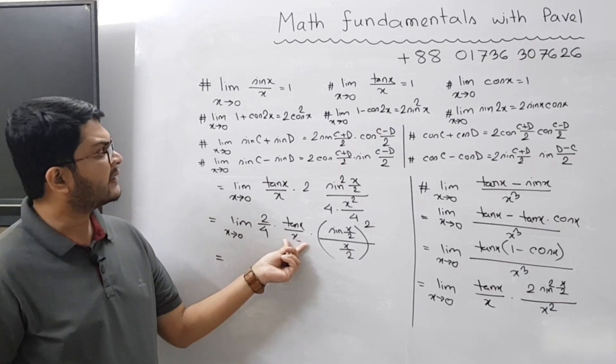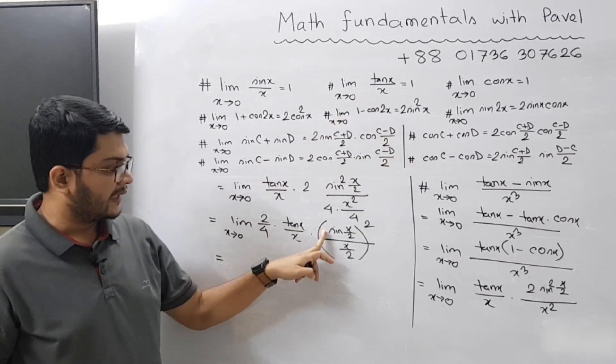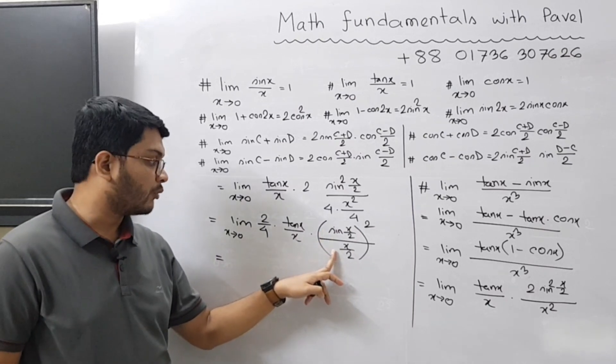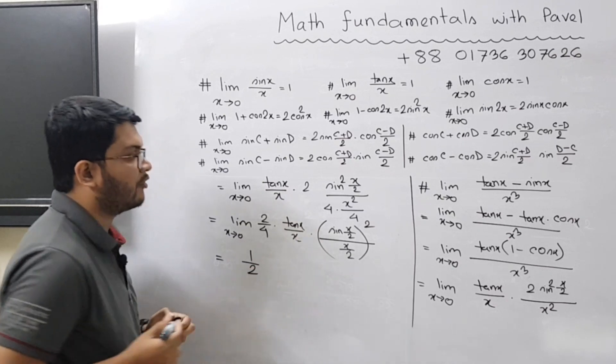So this value tan x by x becomes 1, and sin θ by θ also becomes 1. So you have only 2 divided by 4, which is equal to 1/2.